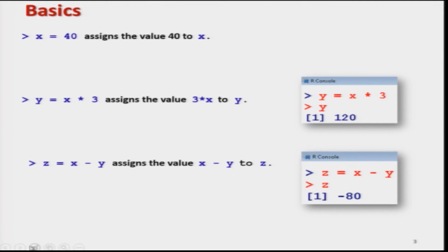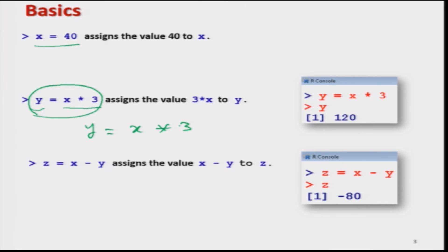For example, suppose I assign x equal to 40, and then I multiply x by 3 and store the outcome in another variable y. I can write y equal to x star 3 — the star operator is the multiplicative sign. Similarly, if I want to find the difference between x and y and store the result in variable z, I would write z equal to x minus y.